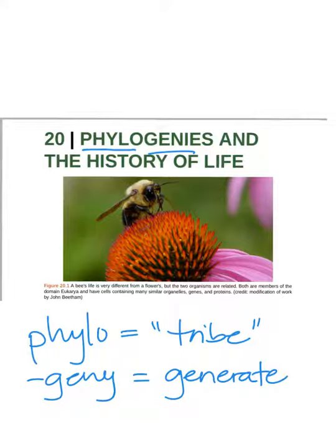So a phylogeny is the evolutionary history of an organism or group of organisms. It also includes relationships to other organisms, both close relationships and more distantly related groups. A phylogeny is essentially the story of where an organism or group of organisms came from.